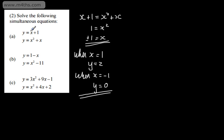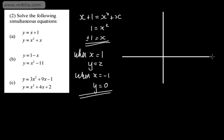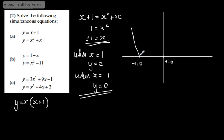The reason we get two solutions is that we have a linear and a quadratic equation. To illustrate this graphically, consider the quadratic: we can factor y equals x squared plus x as y equals x times x plus 1. This is a positive quadratic with solutions at x equals negative 1 and x equals 0, opening upward.